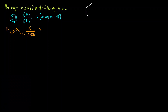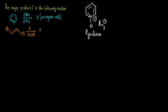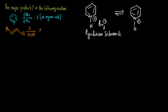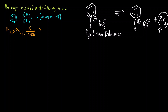Pyridinium tribromide (NH⁺ Br3⁻) is in equilibrium with pyridinium bromide and Br2. This released Br2 acts as the brominating reagent. So from the equilibrium we can obtain Br2, which will then participate in the bromination reaction with the alkene.